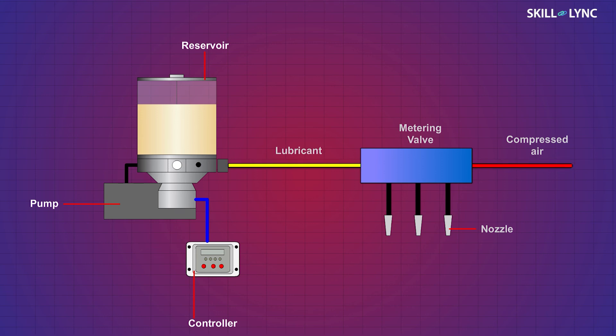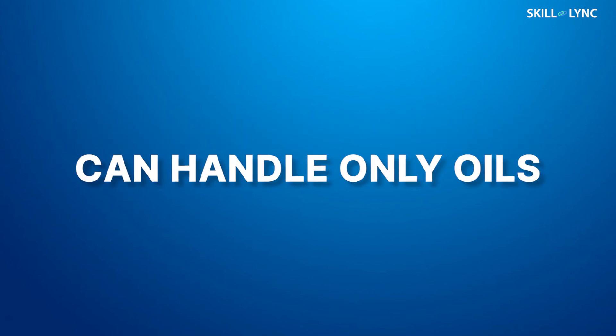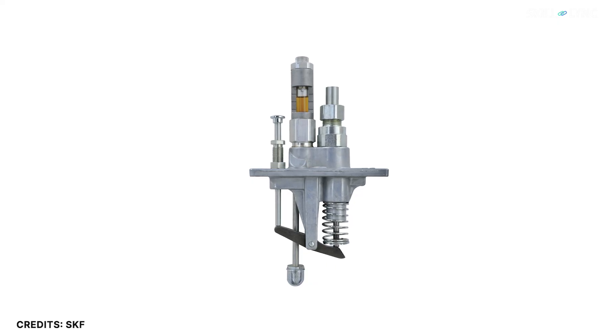The next type is the mist lubrication system. This type of system applies the lubricant in the form of mist. The mist is carried by air currents to the point of application through pipelines. This system requires less pressure for operation and the cost is also less, but the disadvantage is that it can handle only oils.